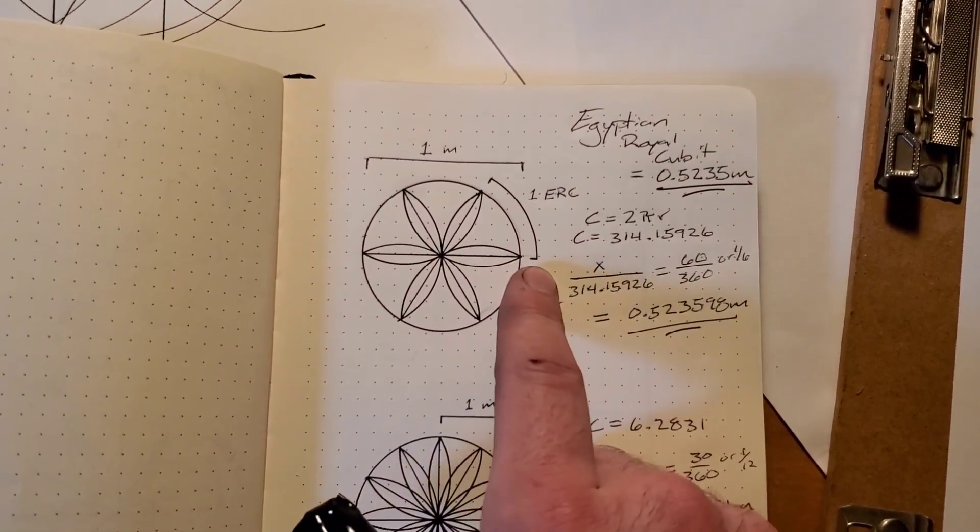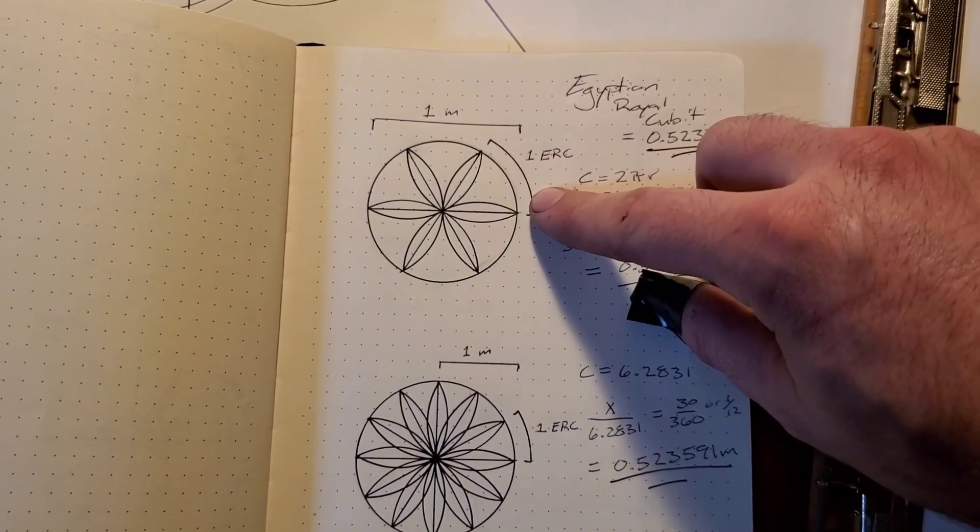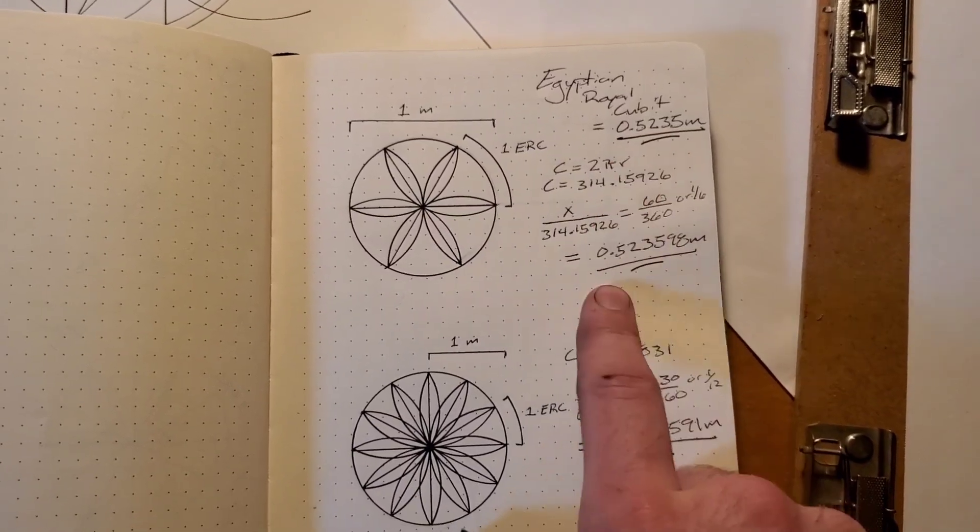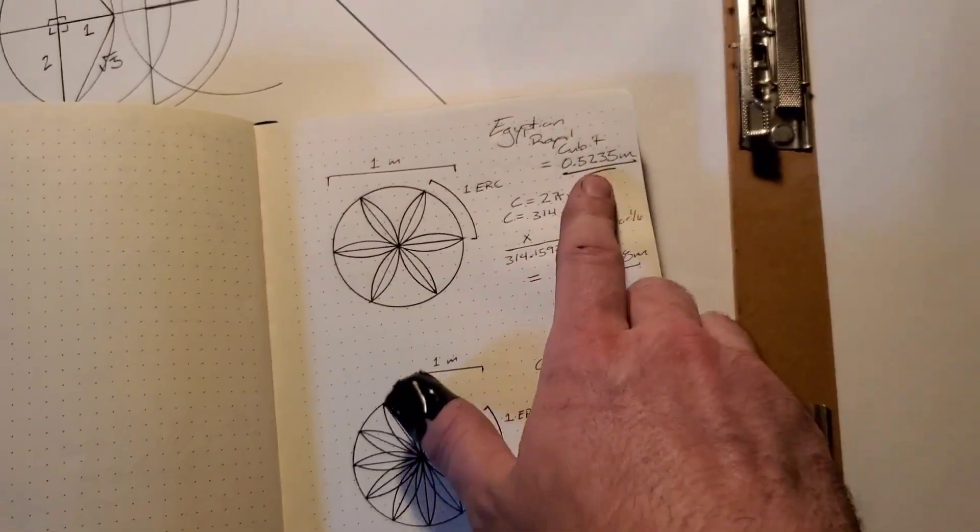Make a one-meter-wide seed of life that naturally divides itself into six equal sections. One-sixth of the circumference of that circle gives us the Egyptian royal cubit, which is quite the coincidence. But there's another crazy coincidence when it comes to the meter and the Egyptian royal cubit.